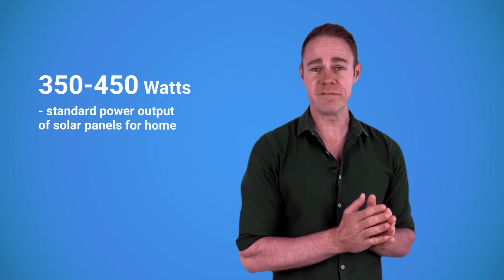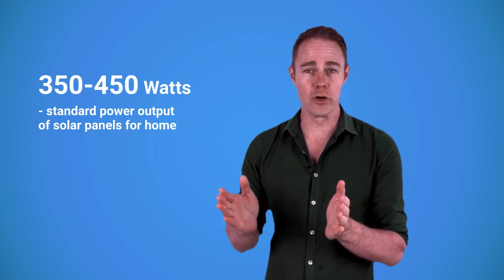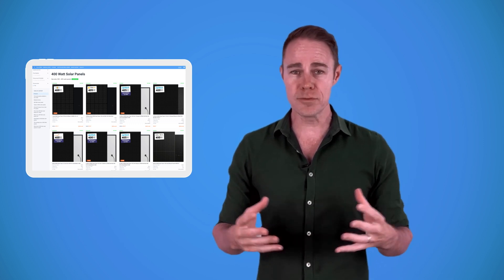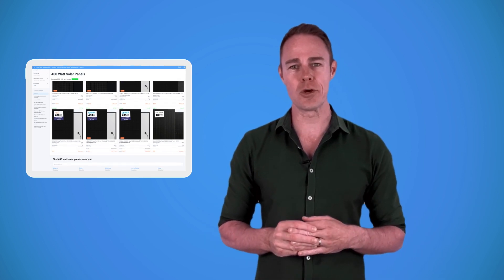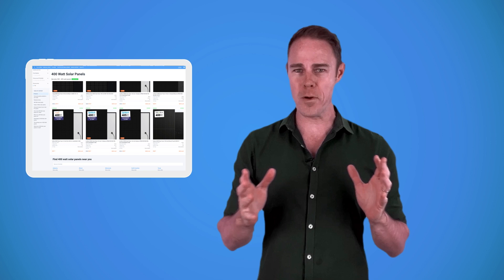In general, people prefer solar panels that range between 350 to 450 watts for their homes. 400-watt panels are the most popular among our customers at A1 Solar Store at the moment. Now what are 400 watts? Well, that's about as much as a big plasma TV needs continuously.